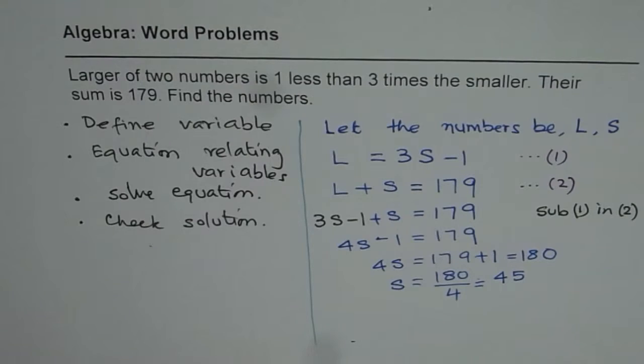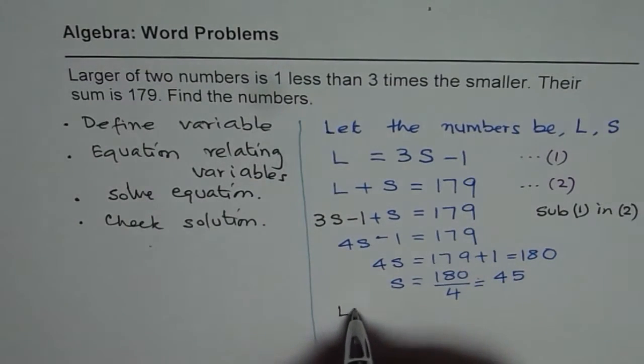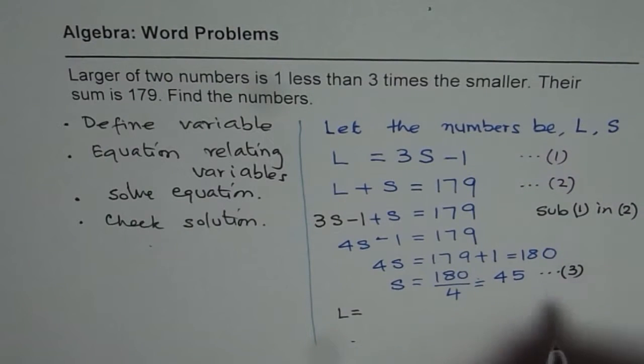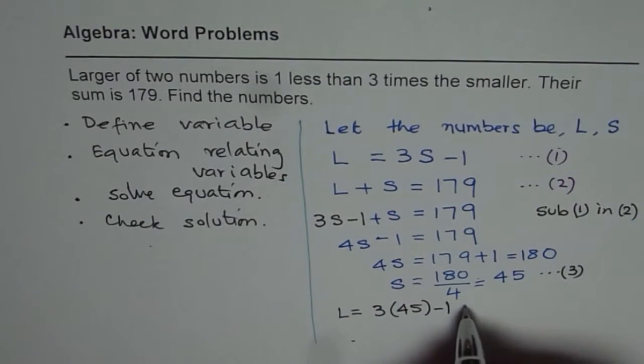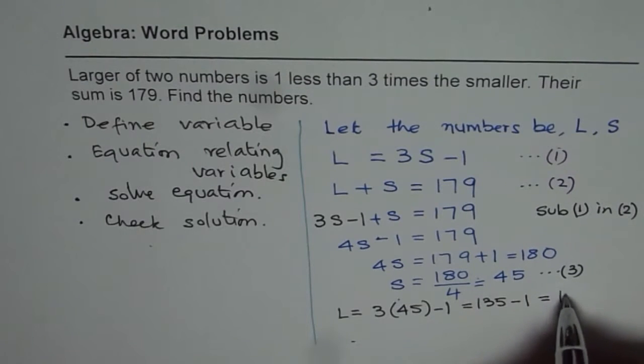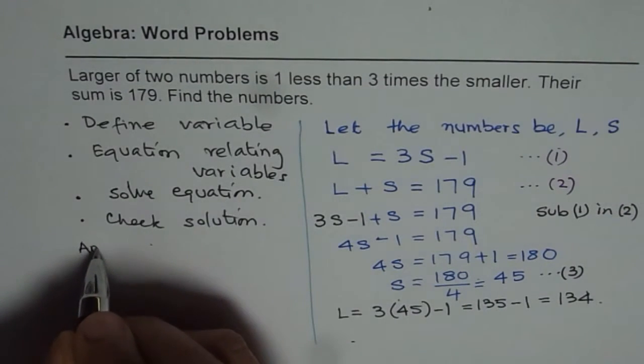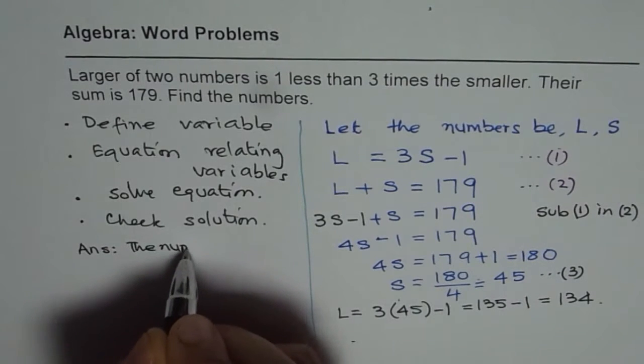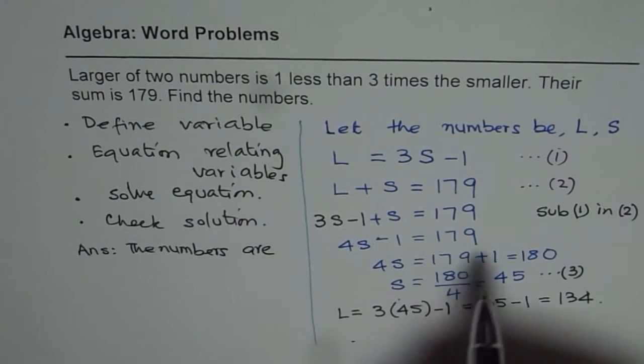So we get one of the numbers and that number is 45, the smaller number. What is the larger number? Equation one says the larger number is 3 times S minus 1. So L = 3 × 45 - 1 = 135 - 1 = 134. So we get both the values of L and S. We have solved the equation and got our answers. The numbers are 134 and 45.